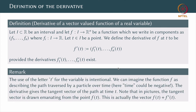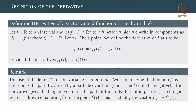One remark I would like to make: usually we use the variable x, but here I have used the variable t. This is intentional. It serves as a psychological aid — these functions f of a scalar variable taking vector values are supposed to be curves. So we can imagine the function f as describing the path traversed by a particle over time. Of course, the time could even be negative; I leave it up to you to imagine what this could mean.